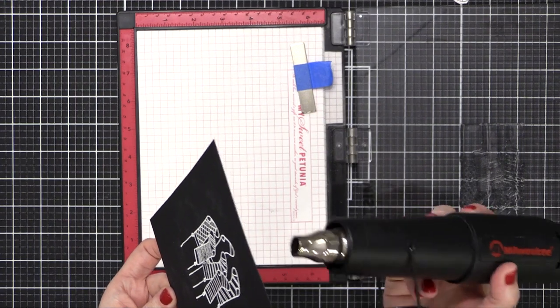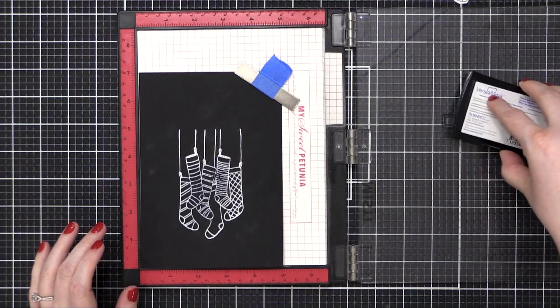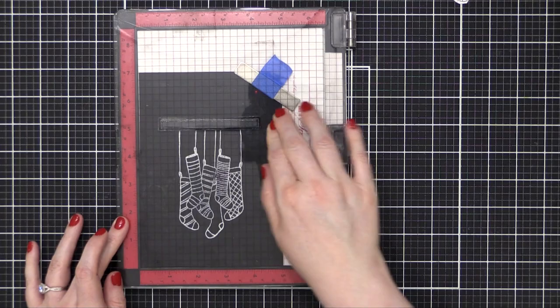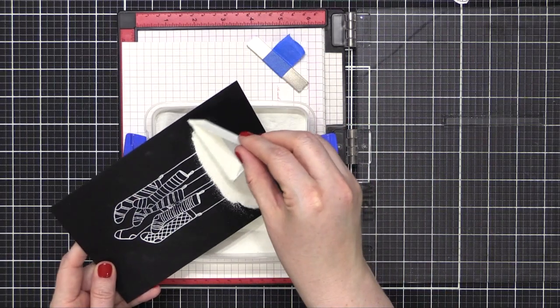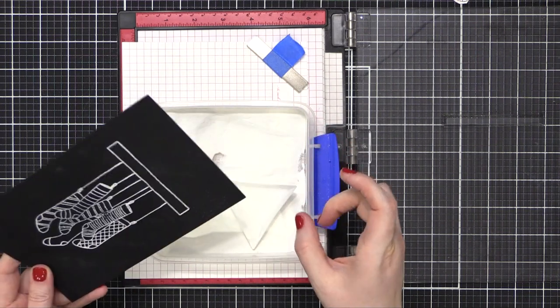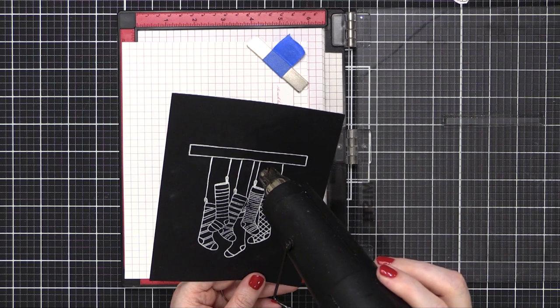I used my heat tool to heat and smooth and melt all the embossing powder, and then I stamped the mantle from the stamp set as well. I'll repeat the same steps for all of the heat embossing.